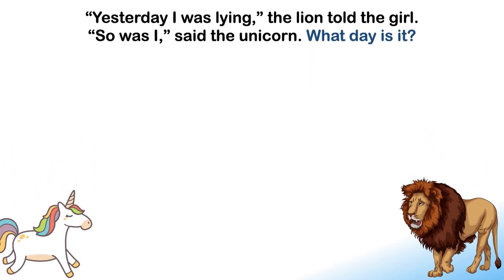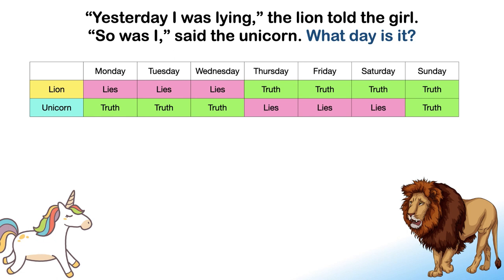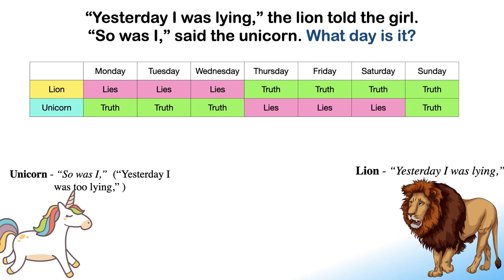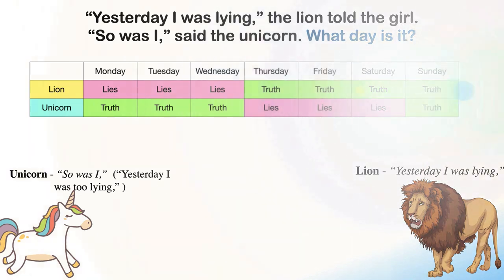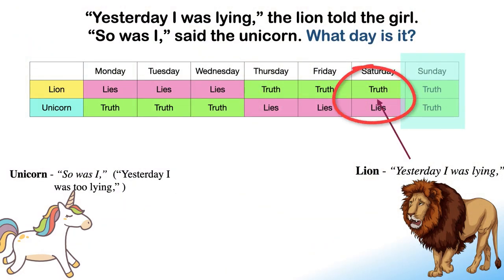The lion lies on Mondays, Tuesdays, and Wednesdays; the unicorn lies on Thursdays, Fridays, and Saturdays. On Sundays both must be telling the truth. If it were Sunday, the lion's statement 'yesterday I was lying' would be a lie — but both must tell truth on Sundays, so it can't be Sunday. For all other days, one must be telling the truth and the other lying.